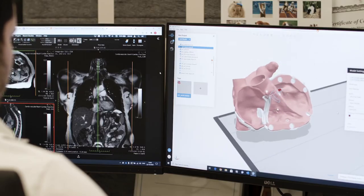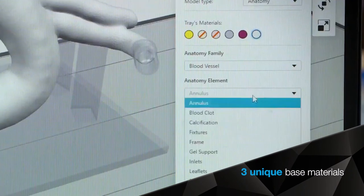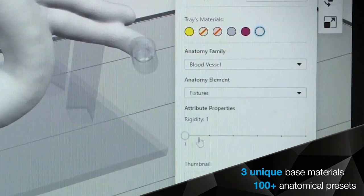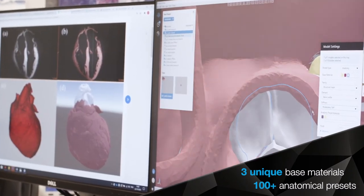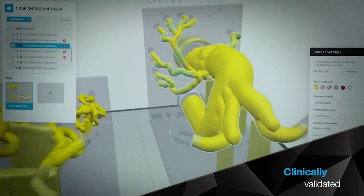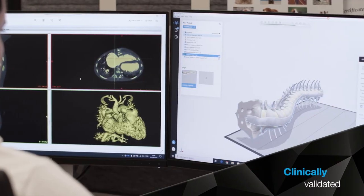The digital anatomy printer software has a preset anatomy menu with more than 100 options that allow you to print accurate, lifelike models in a few clicks by simply choosing the desired anatomy.